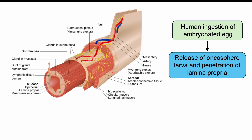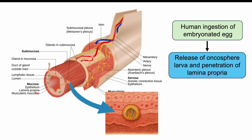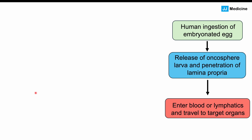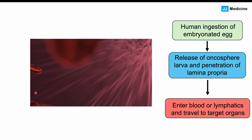The lamina propria is the layer inside the intestines. Looking inside the intestines, there are multiple layers: the mucosa, which is made up of the epithelium, the lamina propria, and the muscularis mucosa. The onchospheres penetrate the lamina propria, enter into the blood and lymphatics, are carried through the blood, travel to target organs, and end up in places like the liver — which is what most often occurs with echinococcus granulosus.